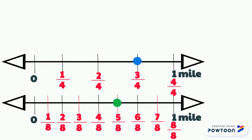Now that our points have been plotted, we can clearly see that three-fourths is further on the number line than five-eighths.